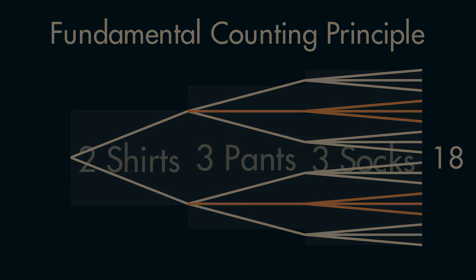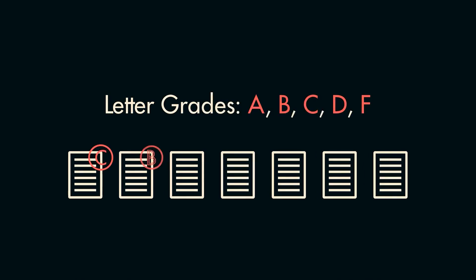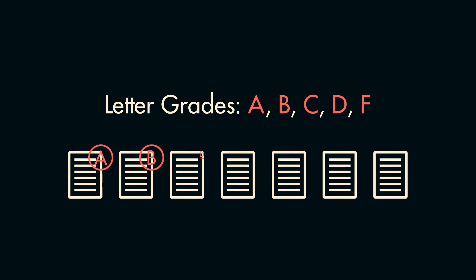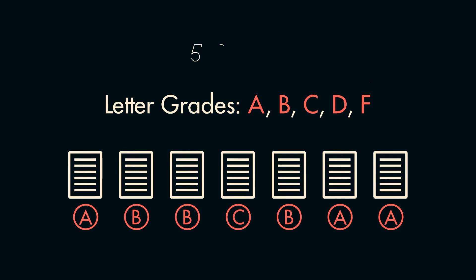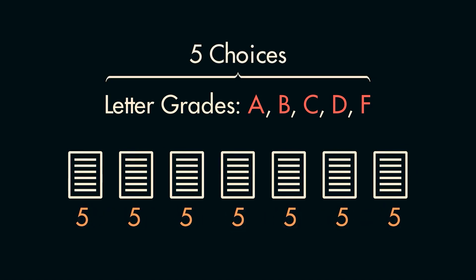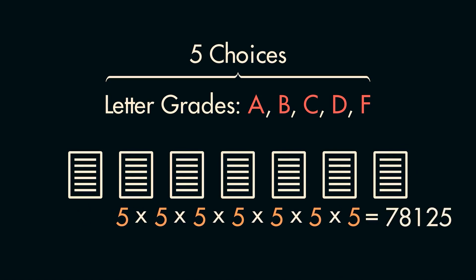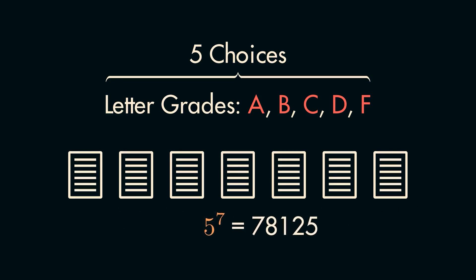Now, oftentimes in these problems, we'll be choosing from the same options multiple times. For instance, say you're a teacher who does not care about their job, and you have seven tests to grade. Being the amazing teacher that you are, you decide to randomly assign each test a random letter grade — A, B, C, D, F — with repetition. How many variations of letter grades can you assign to the tests? Well, making use of the fundamental counting principle, you'd simply multiply the number of potential letter grades, five, seven times, to get 78,125. However, you could have also realized that you're making the exact same choice each time, and just as simply take the number of choices and put it to the power of the number of times the event is repeated.